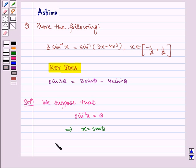Using the identity written in the key idea, sine 3 theta equals 3x minus 4x cube, substituting sine theta for x.